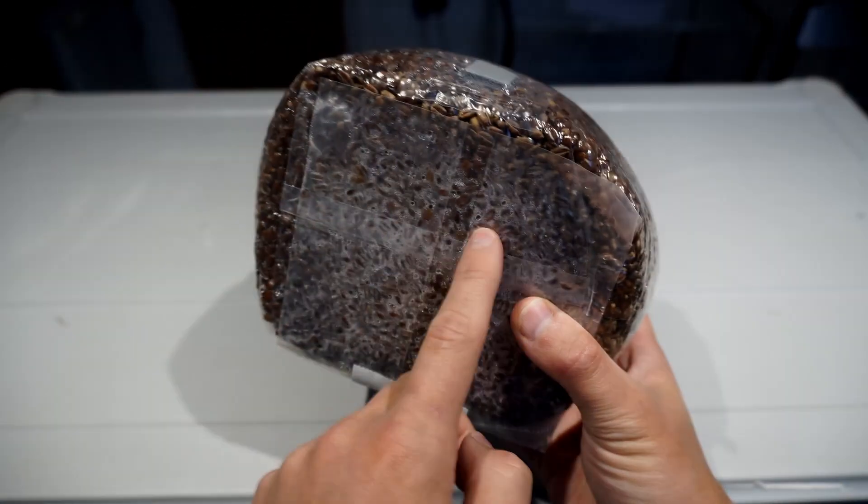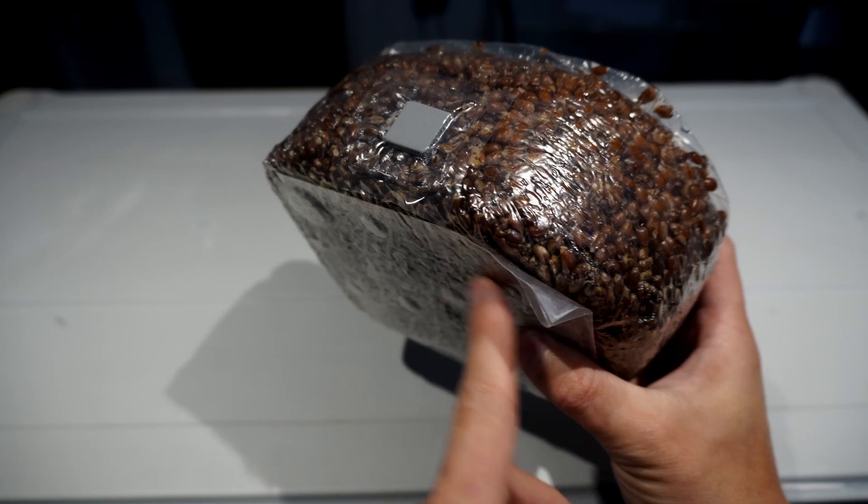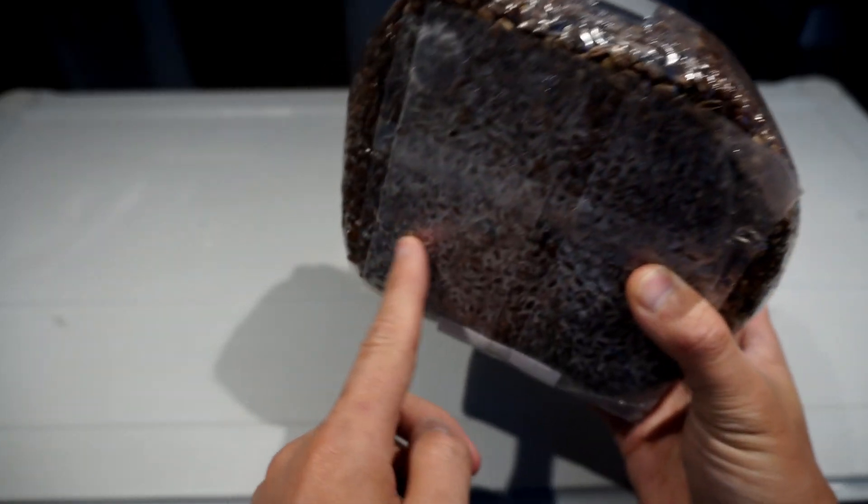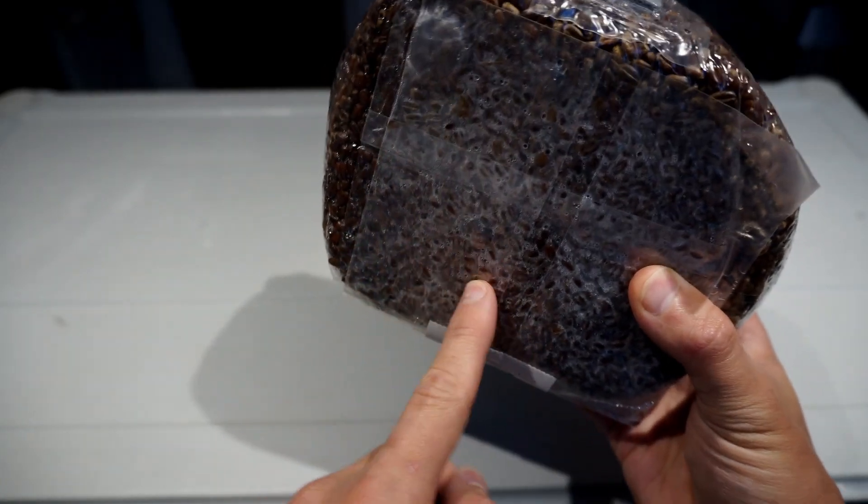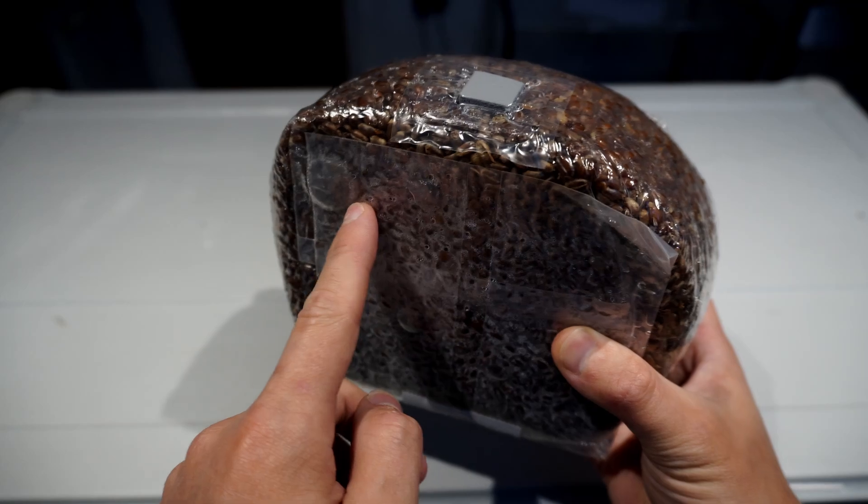This is what the grain bag looks like when it comes out the pressure cooker. You can see at the bottom of the bag here is sealed to the bottom of the grains which is perfect for taking it from the pressure cooker into your still air box.